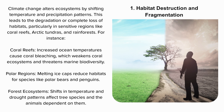For instance, coral reefs: increased ocean temperatures cause coral bleaching, which weakens coral ecosystems and threatens marine biodiversity. Polar regions: melting ice caps reduce habitats for species like polar bears and penguins. Forest ecosystems: shifts in temperature and drought patterns affect tree species and the animals dependent on them.